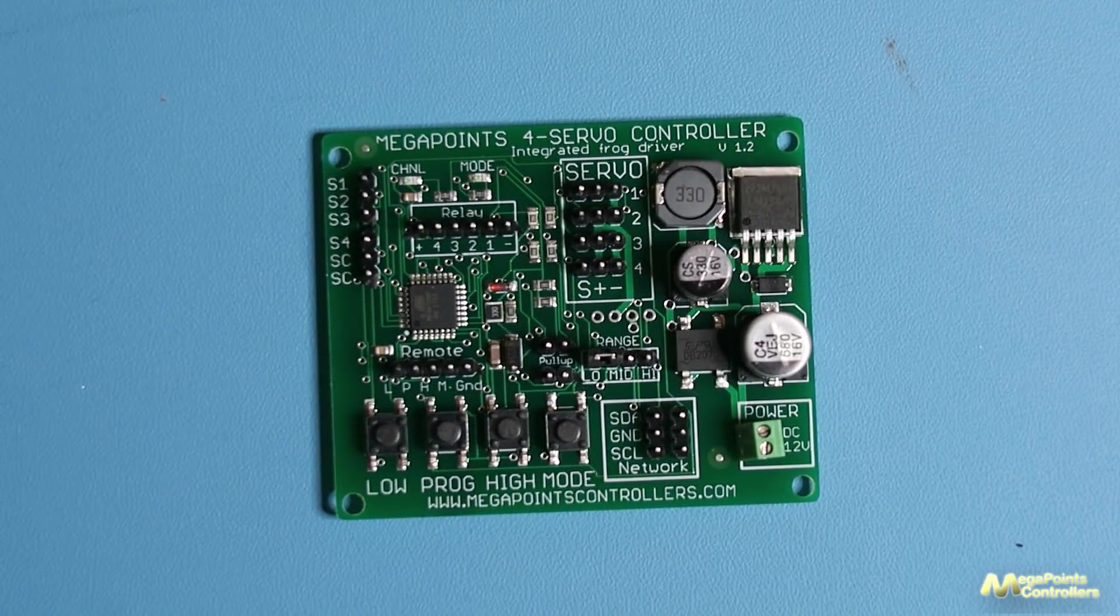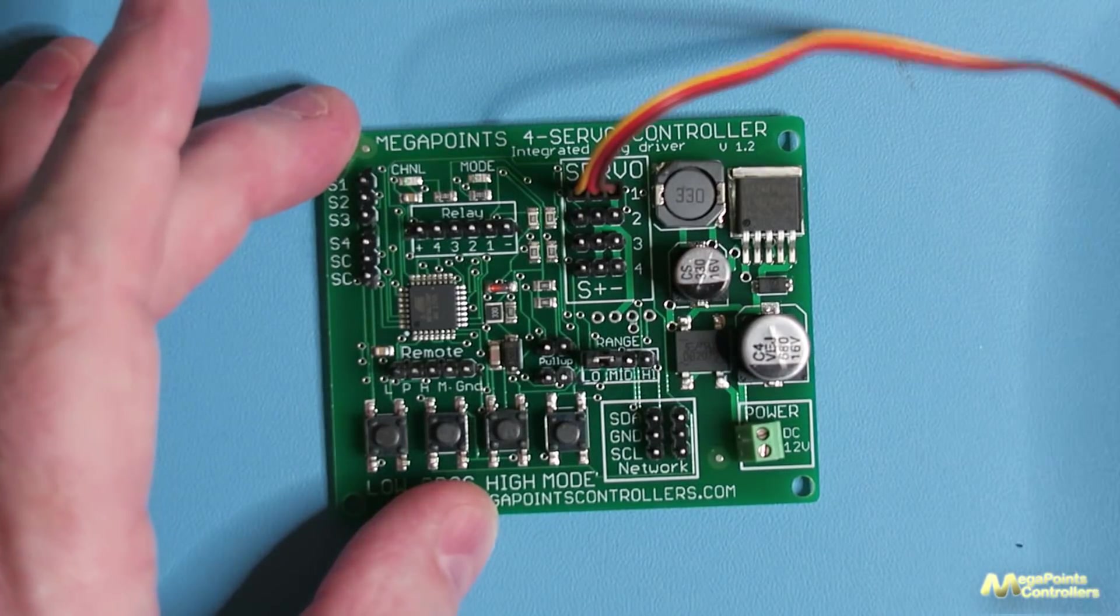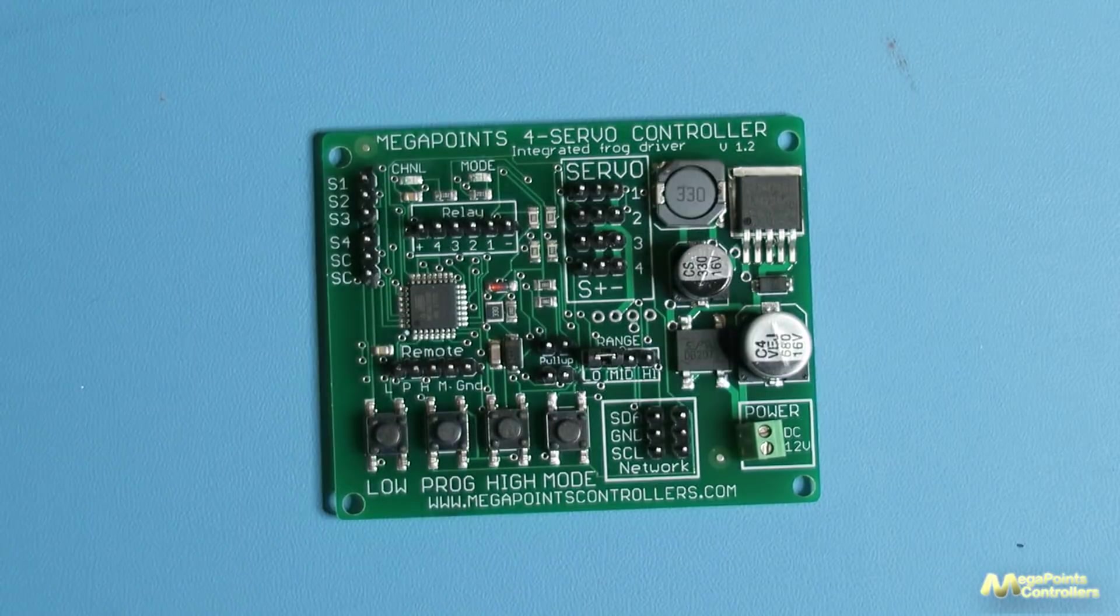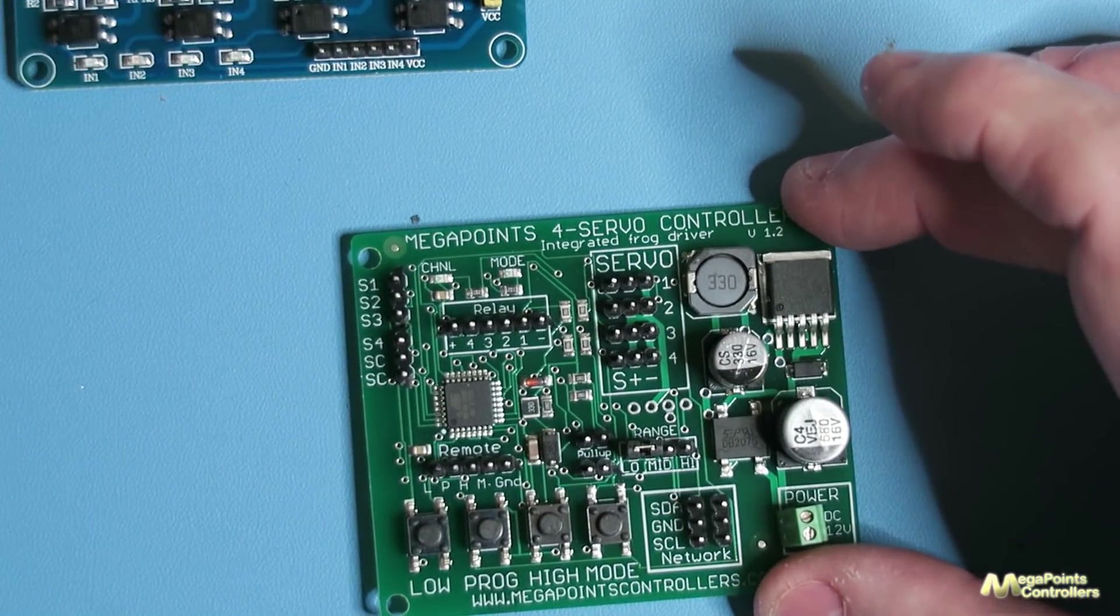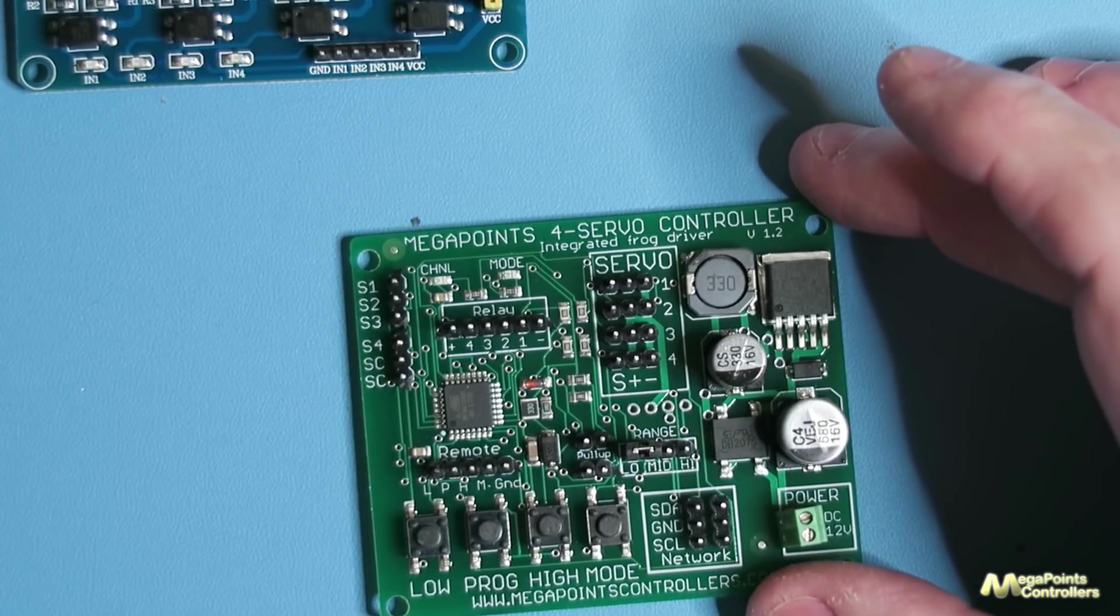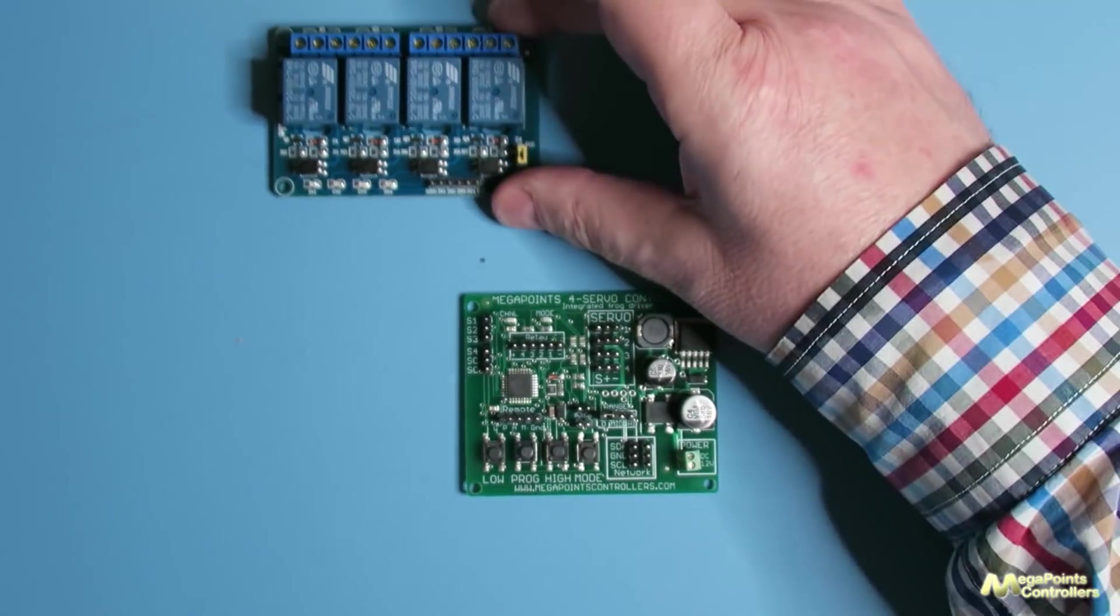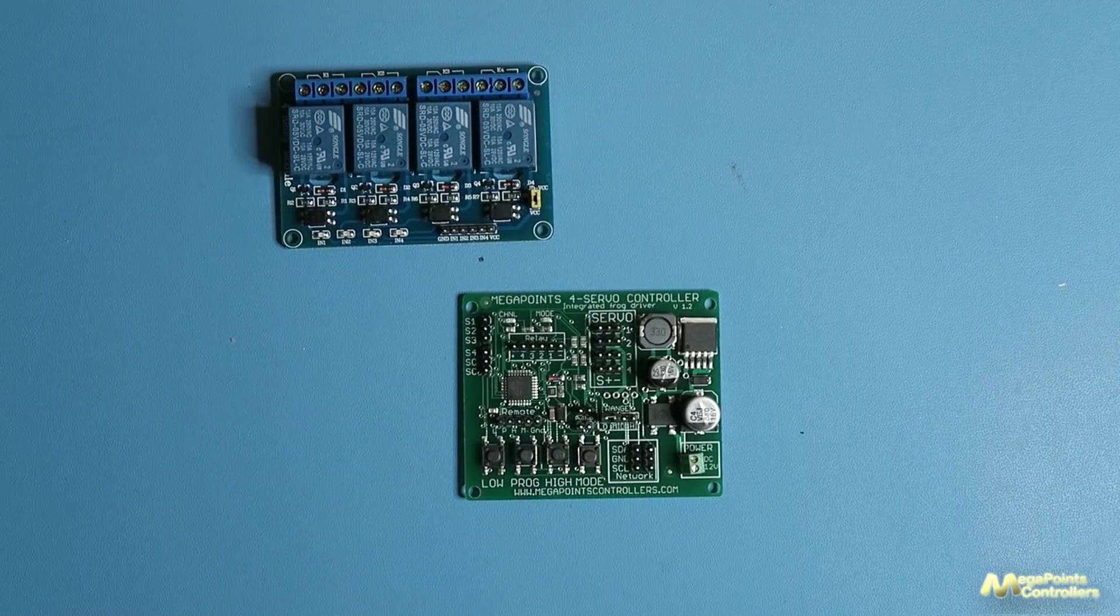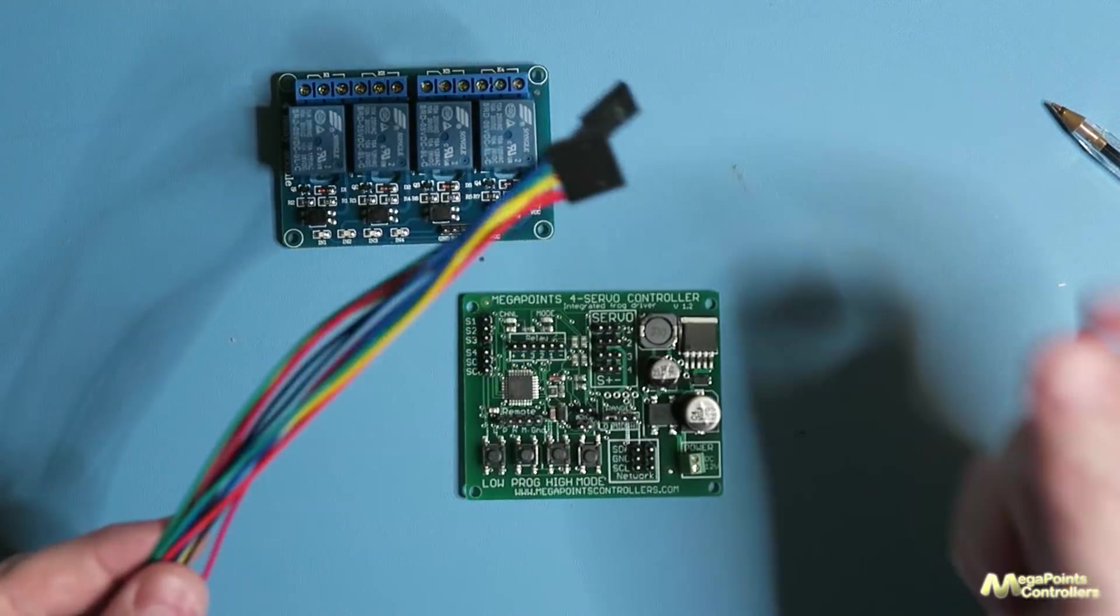The way it works is very similar to the servo controller we currently do, where you plug in a servo like so and connect to one of the four channels. The big difference though with this board is that it also includes one of the relay boards, so you get a four-channel relay board with it, which is capable of switching up to 10 amps per channel on each of these outputs, and of course the hookup cable.